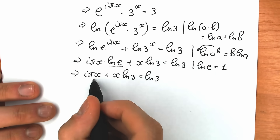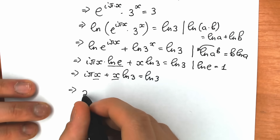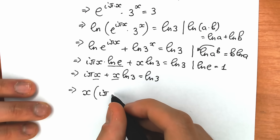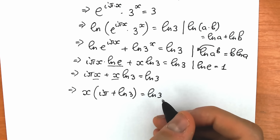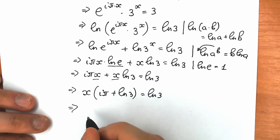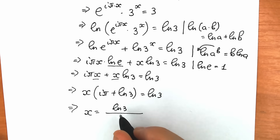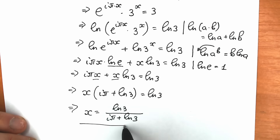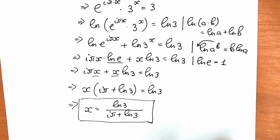We have x on both terms on the left side, so let's factor x out: x(iπ + ln 3) = ln 3. Dividing both sides by (iπ + ln 3), our final answer for Method 1 is x = ln 3 / (iπ + ln 3). This is our complex solution.